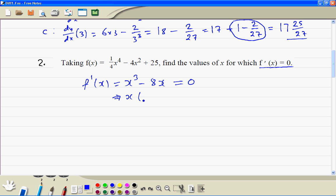x is a common factor. So that's x times x squared minus 8 in a bracket. So we get two solutions. x is equal to 0 or x squared equals 8.